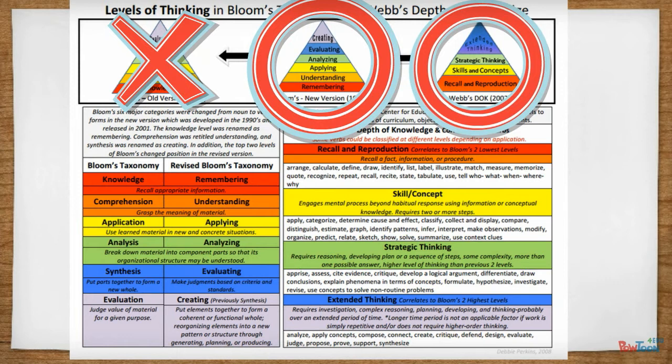Webb's DOK is a framework to categorize and create tasks with careful consideration for all the knowledge and skills required to complete them. Let's take a look at the six levels of RBT.